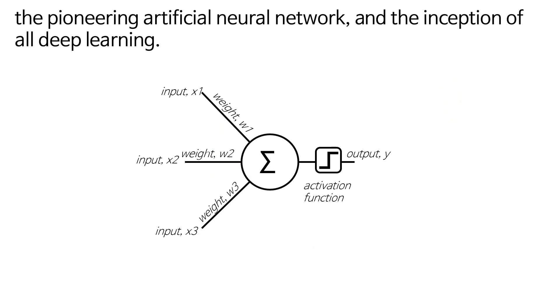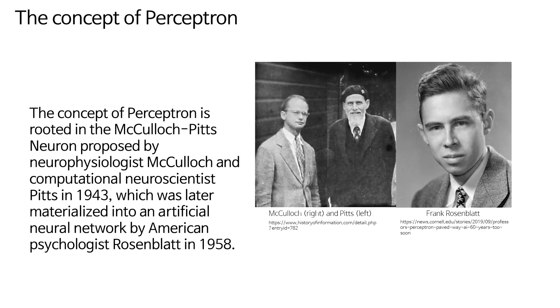The concept of perceptron is rooted in the McCulloch-Pitts neuron proposed by neurophysiologist McCulloch and computational neuroscientist Pitts in 1943, which was later materialized into an artificial neural network by American psychologist Rosenblatt in 1958.